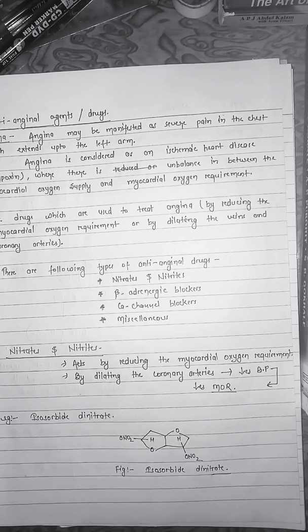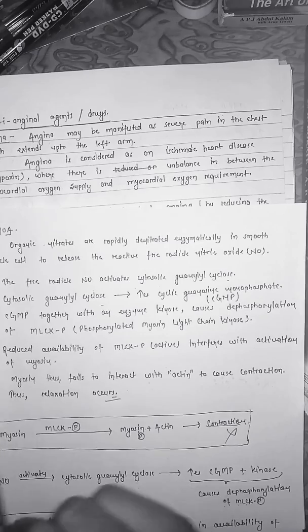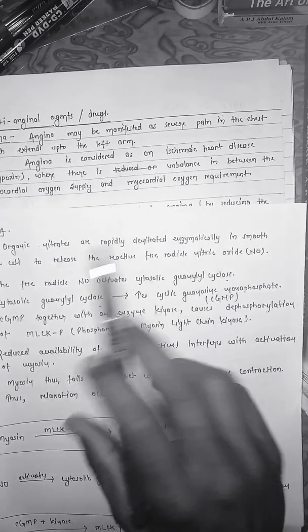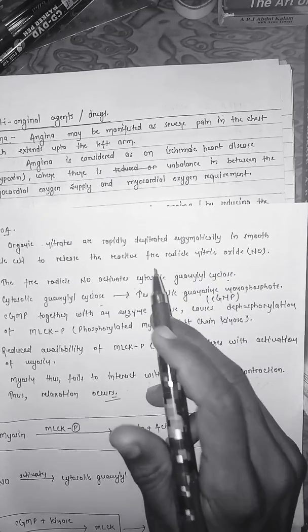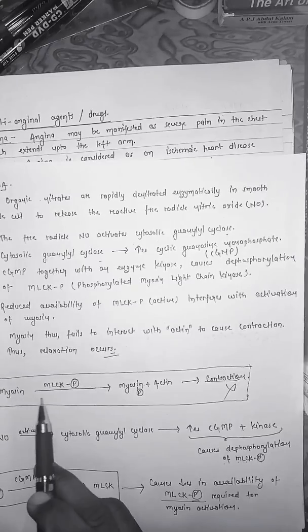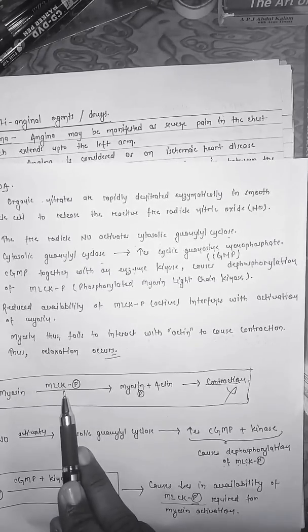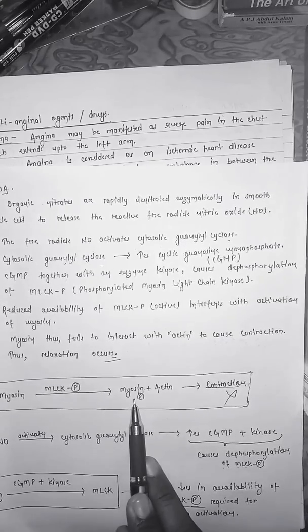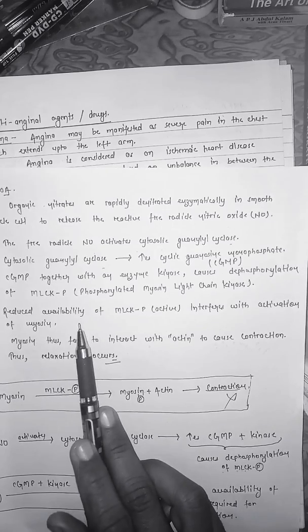Now we are talking about the mechanism of action of nitrates. The organic nitrates are rapidly denitrated enzymatically in smooth muscle cells to release the reactive free radical nitric oxide. Before studying the mechanism, myosin gets activated in the presence of phosphorylated myosin light chain kinase (MLCK), and the activated myosin interacts with actin, which results in contraction of the smooth muscle.